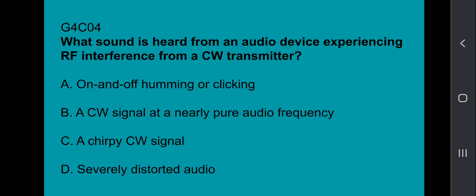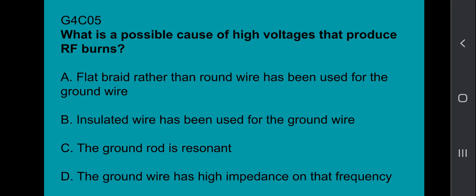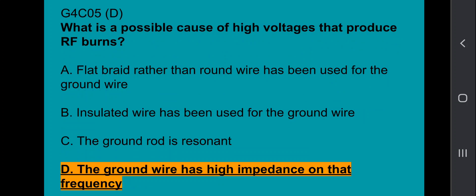G4C04, what sound is heard from an audio device experiencing RF interference from a CW transmitter? Off and on humming or clicking. G4C05, what is a possible cause for high voltages that produce RF burns? The ground wire has high impedance on that frequency.